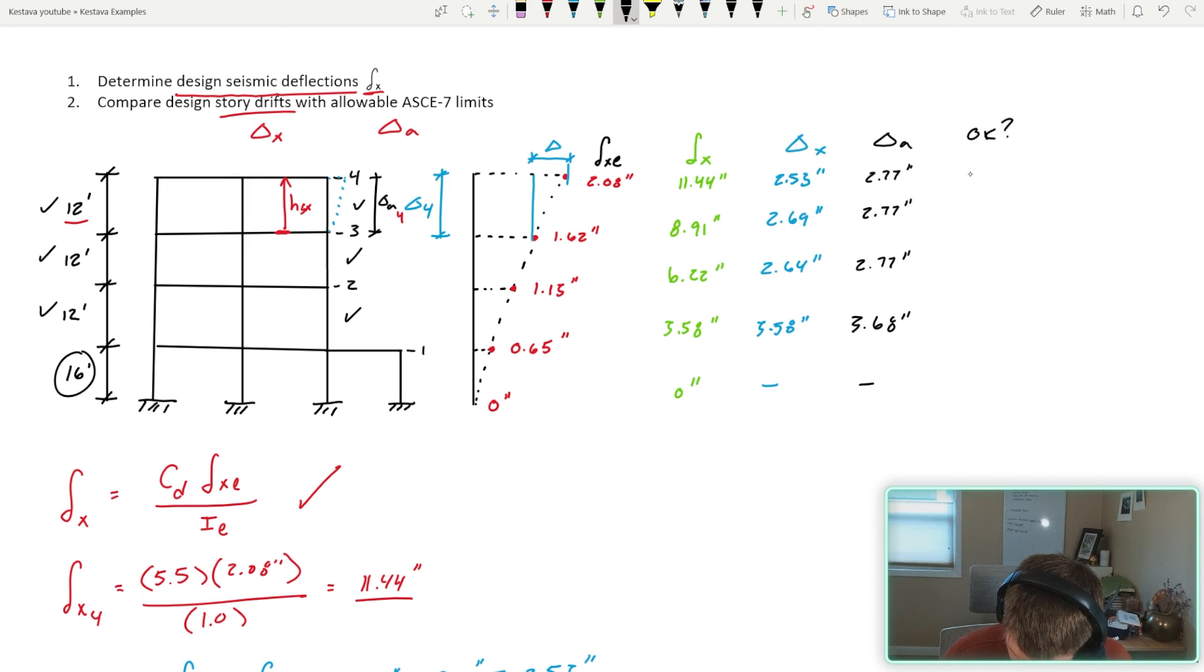And are we okay? Fourth floor, we are within drift limits. Third, we're within drift limits. We're within drift limits. First floor, we are within drift limits. So this structure is compliant with the ASCE 7, at least from a story drift perspective. And there you go. That's the end of today's example.